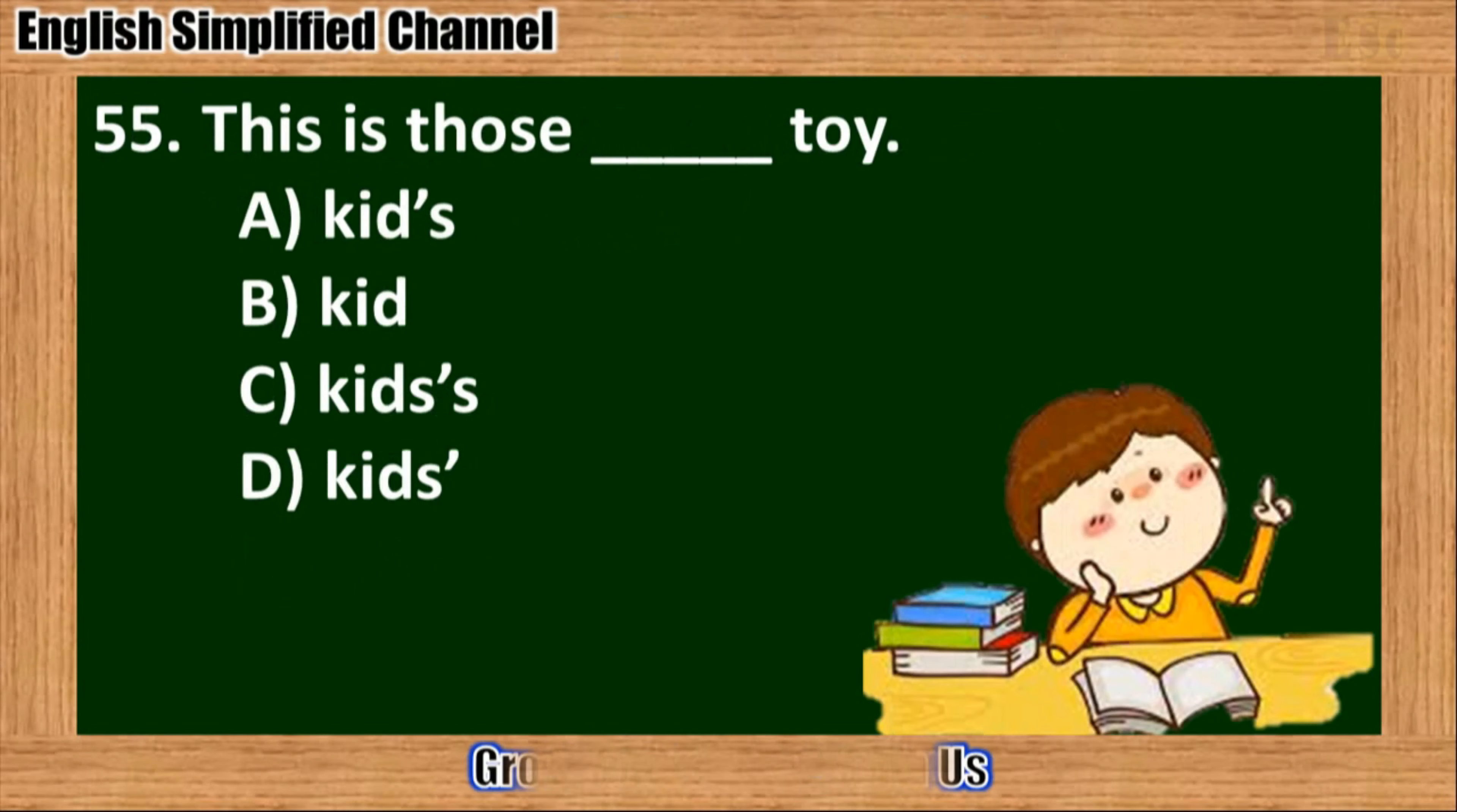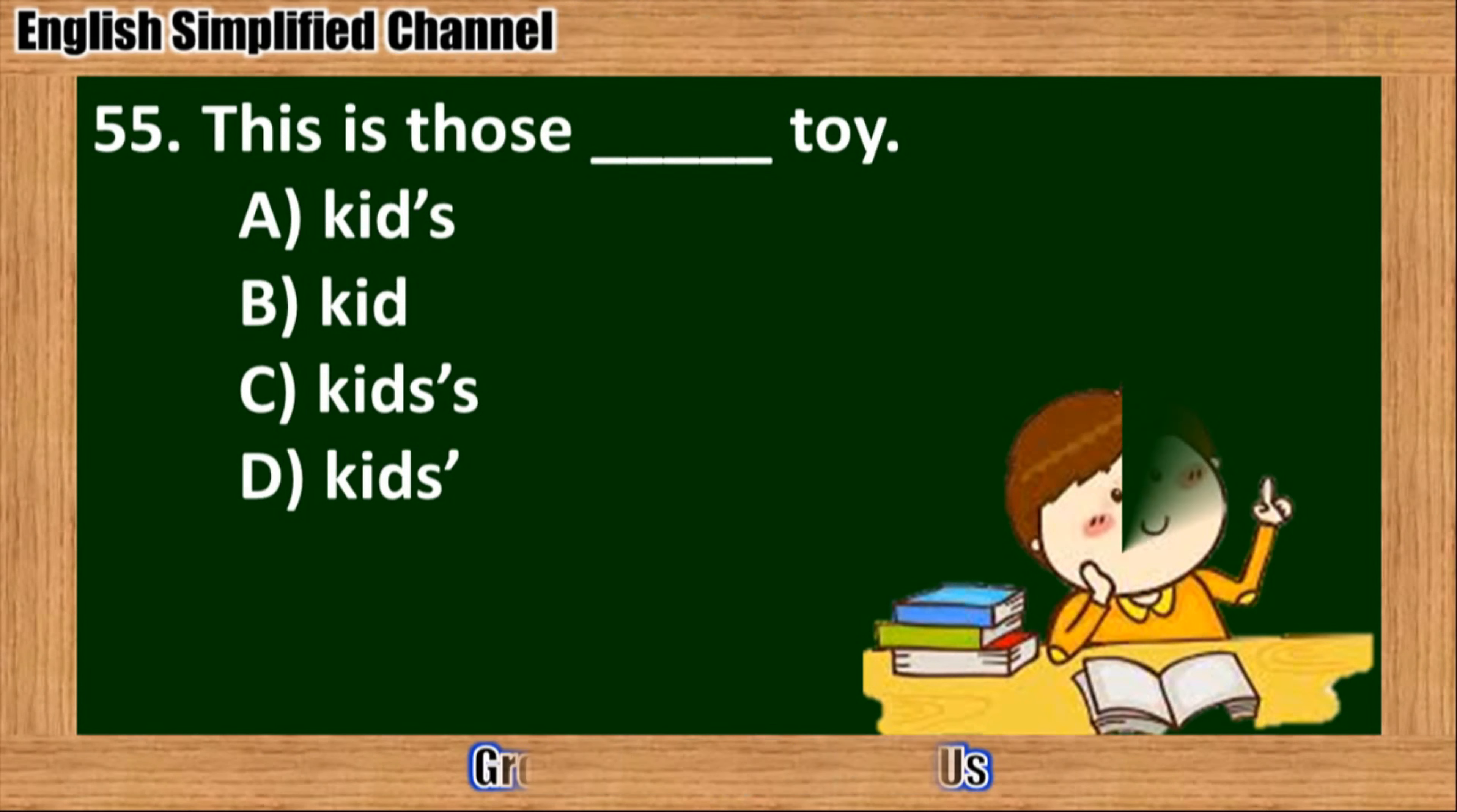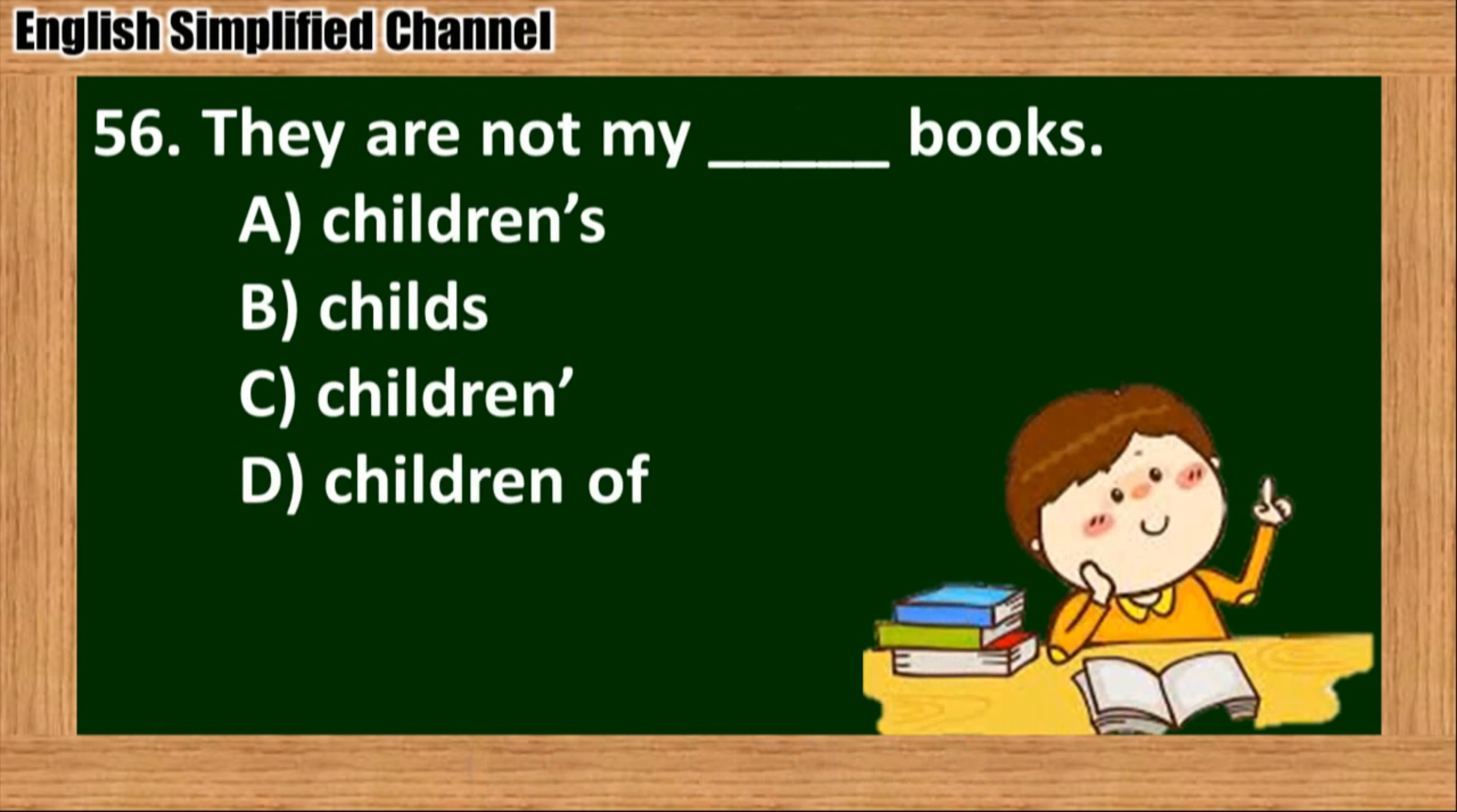55. This is those blank toy. A. Kids. B. Kid. C. Kids S. D. Kids.